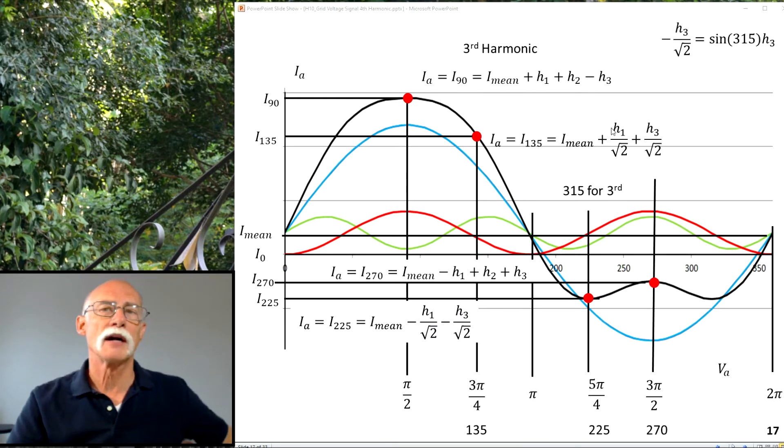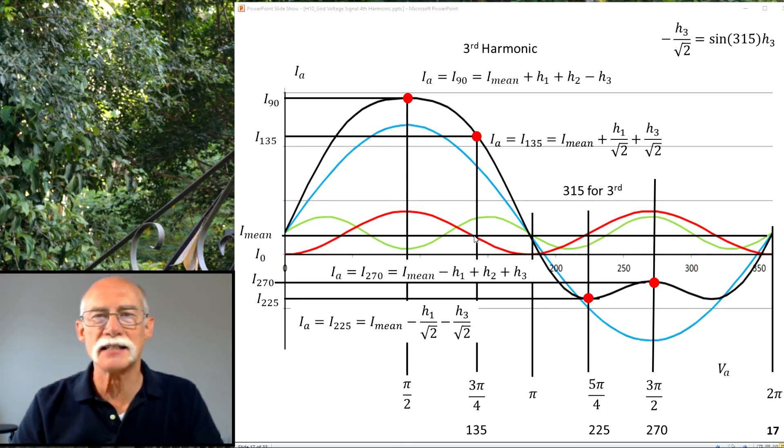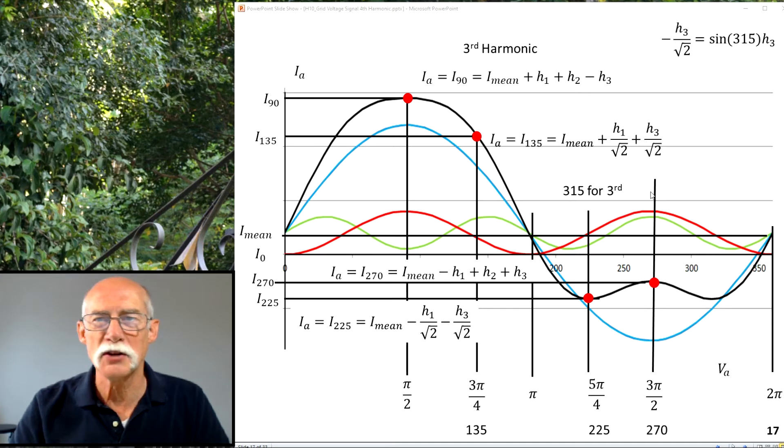Third order harmonic, this is how we set it up. We went in an equation at I 90, 135, 225, and 270. Here are the radians at the bottom. I picked those points on purpose because the second order harmonic is zero at those points.